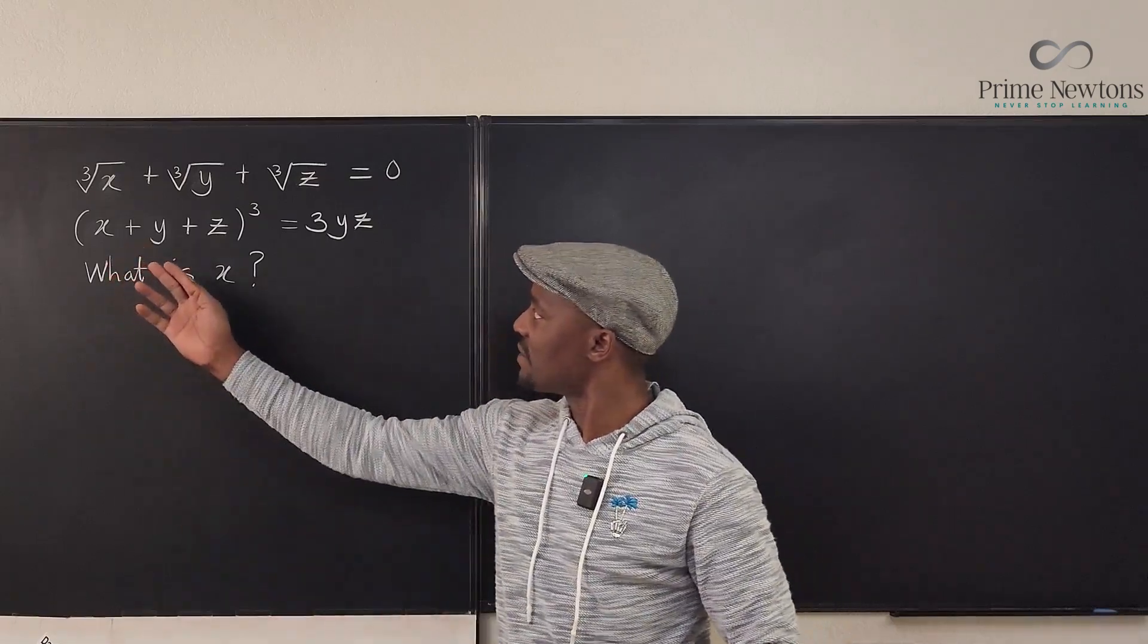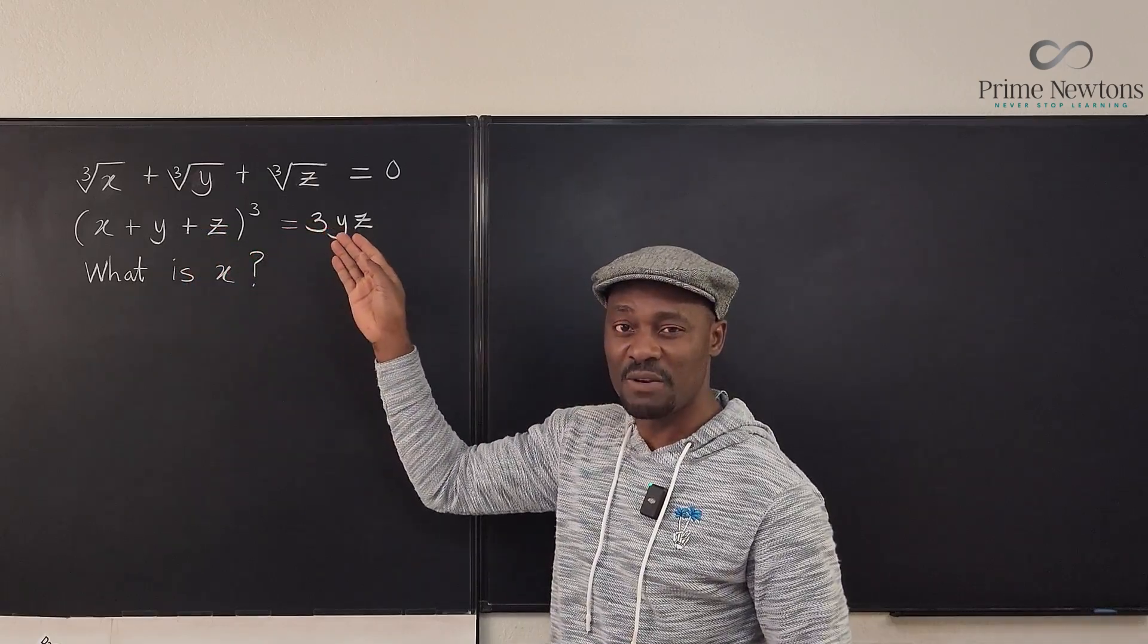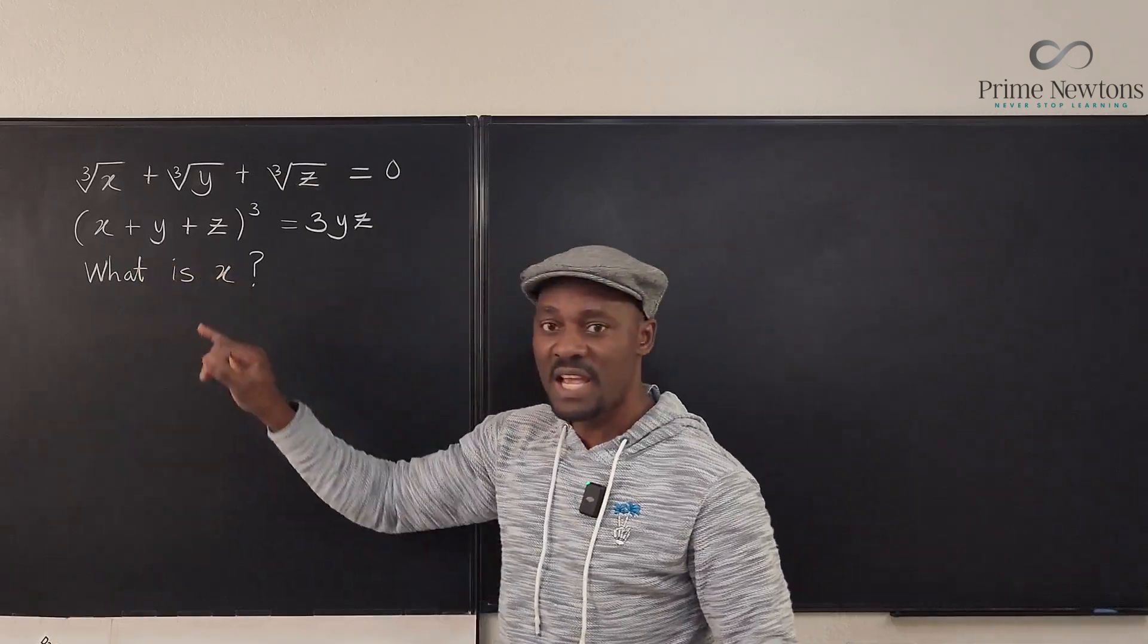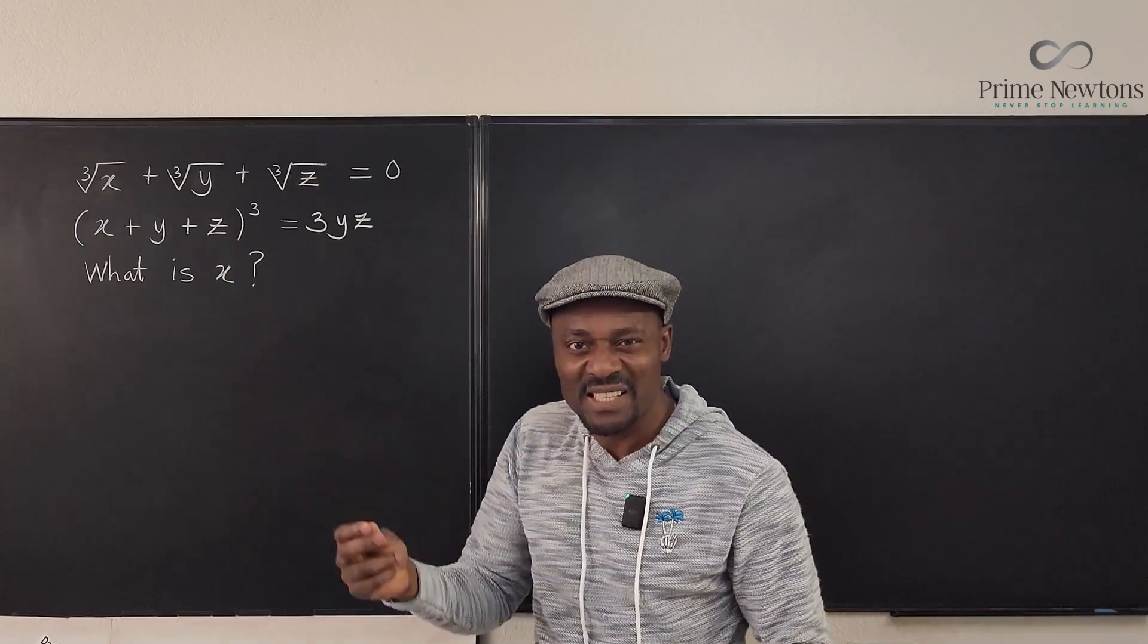We have the cube root of x plus the cube root of y plus the cube root of z equals zero. And if you add x to y to z and cube it, you're going to get three yz. We just want to know what x is.